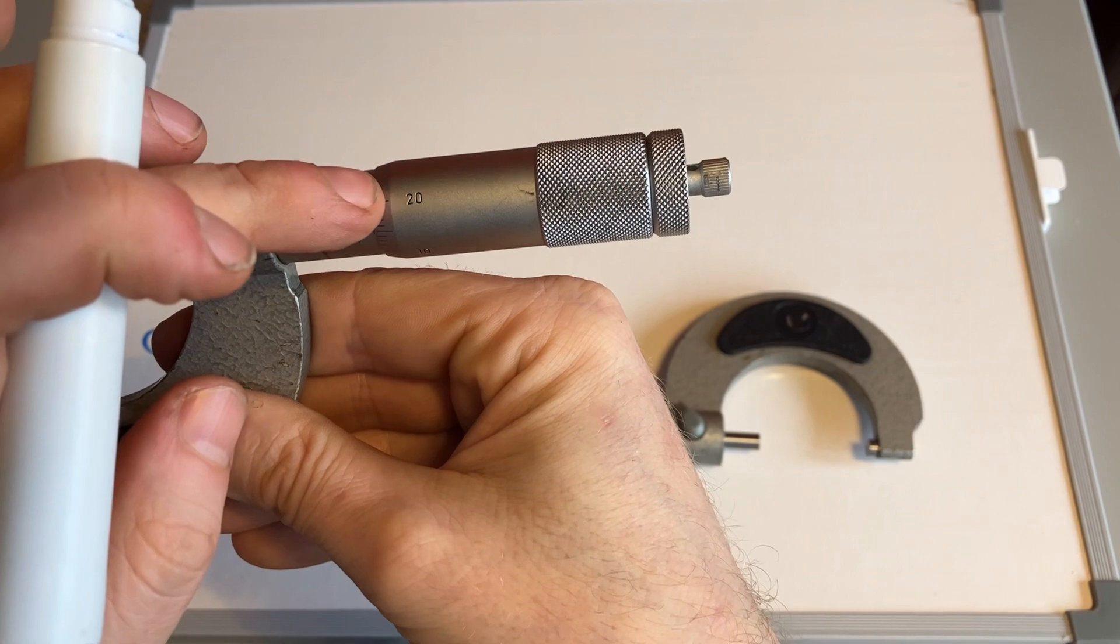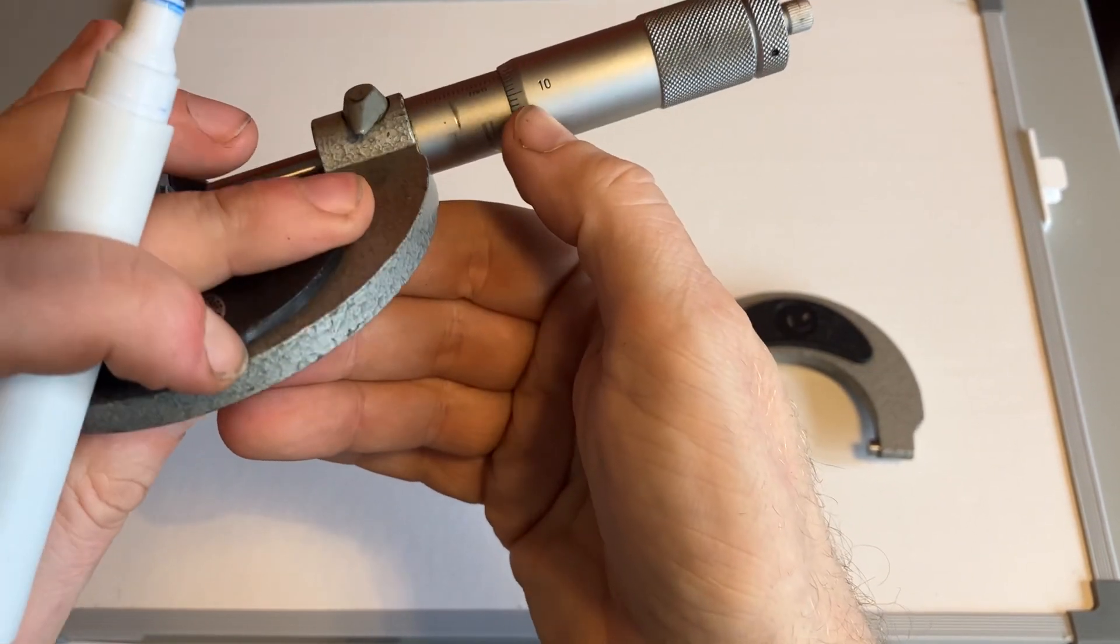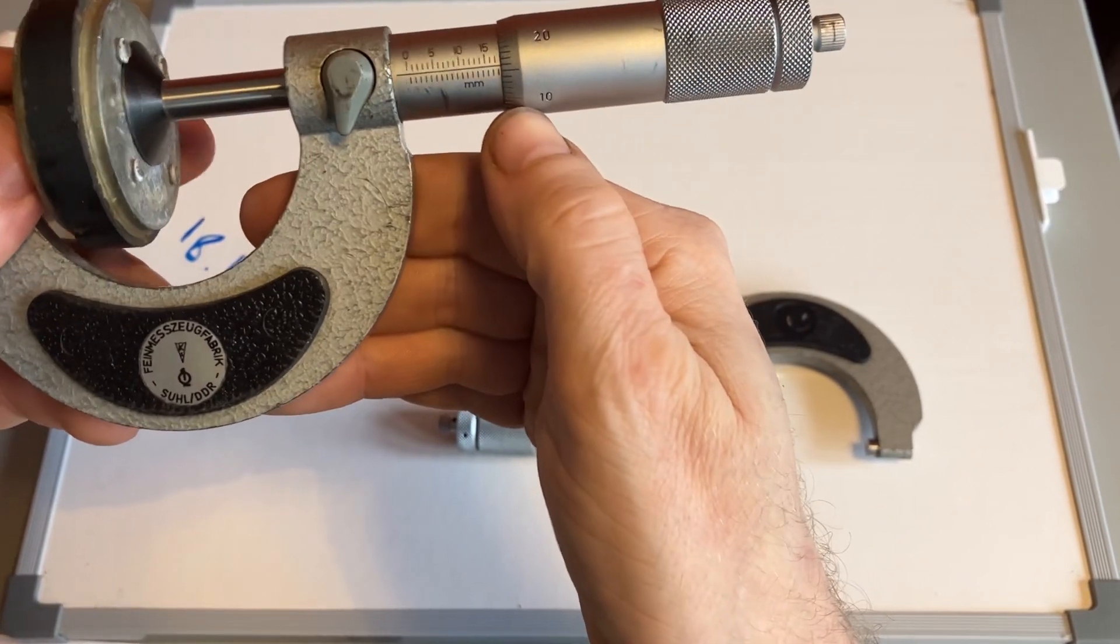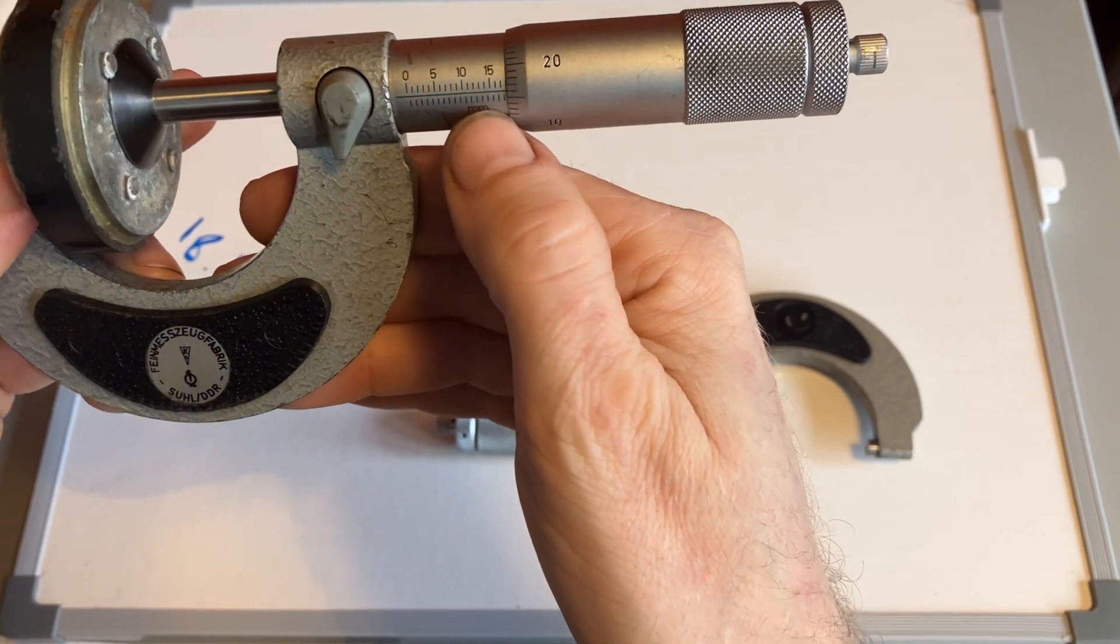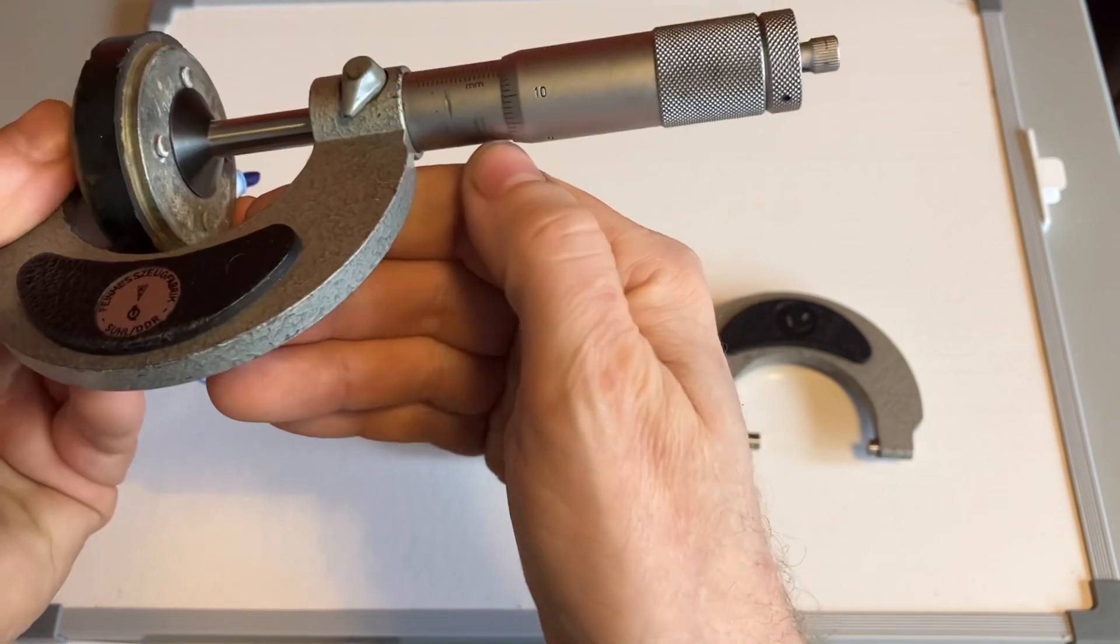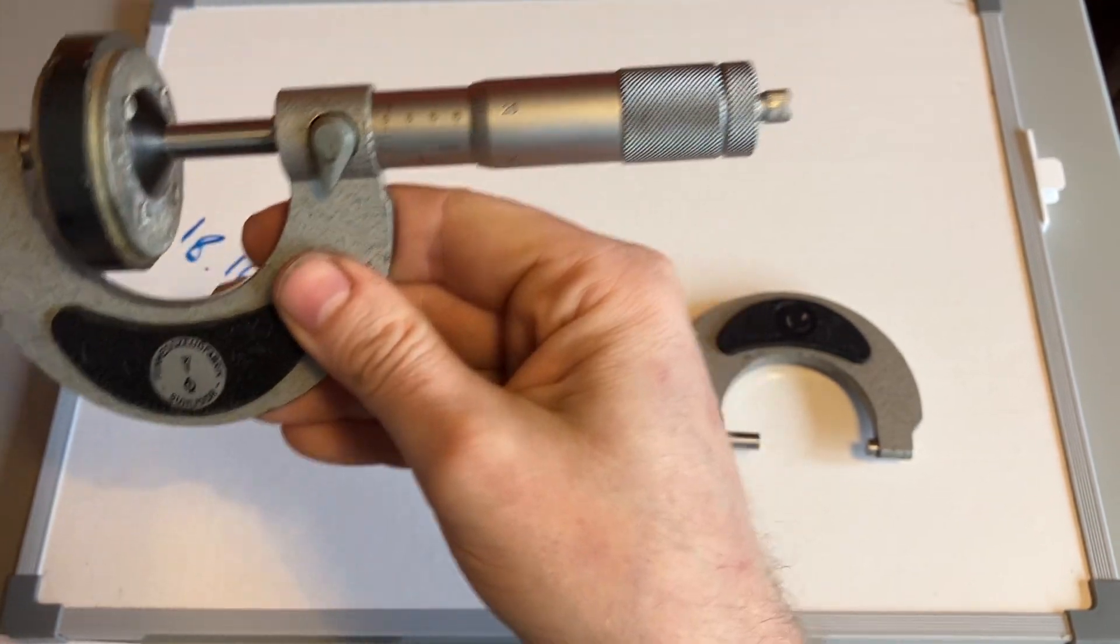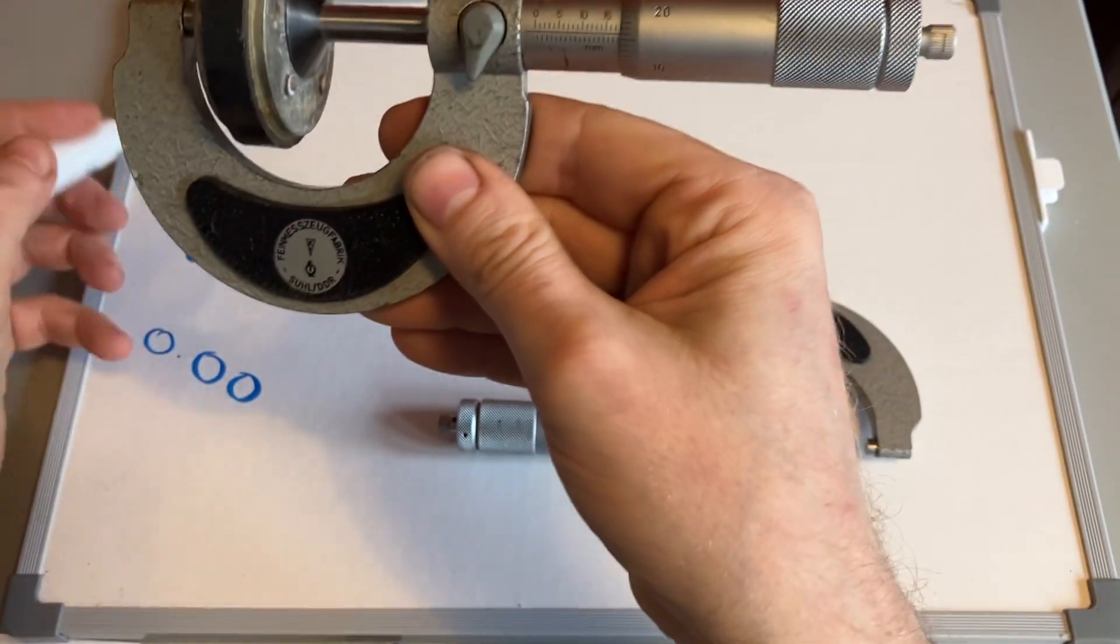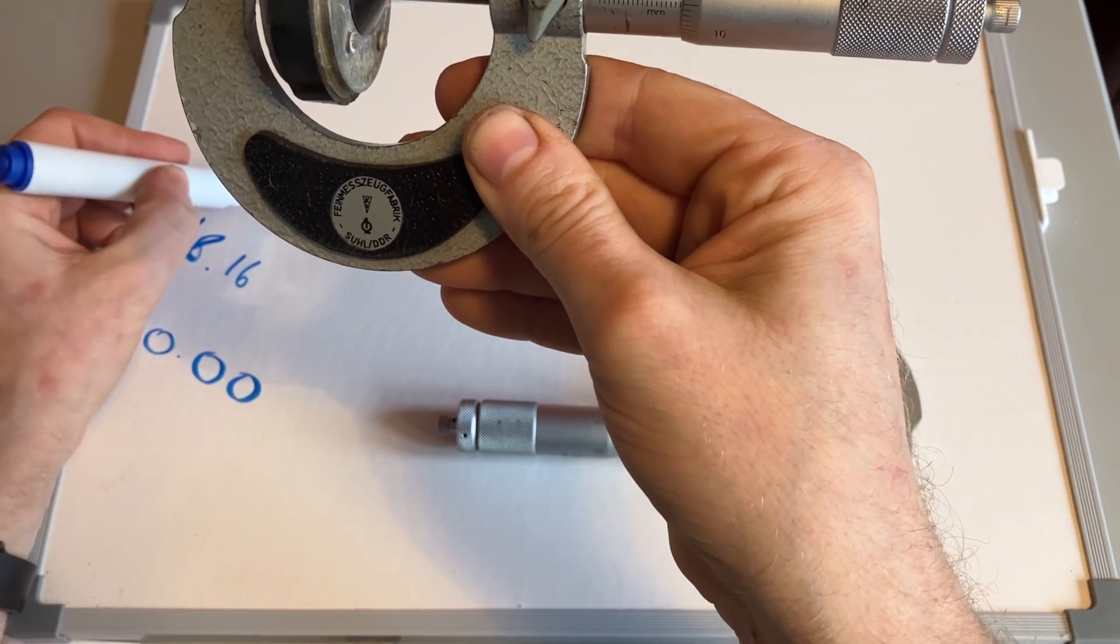So I've got 18 in the whole numbers, and then I've got 16 or 0.16 of a millimeter on this collar here. If I saw a dash after the whole number, then it would automatically become a 5, and then I'd be adding 16 to that. So if it was half a millimeter wider, it would automatically become 18.66.